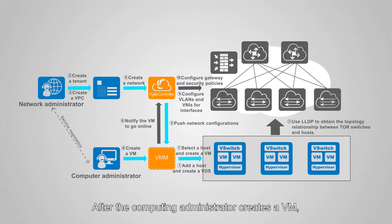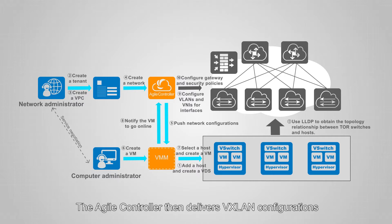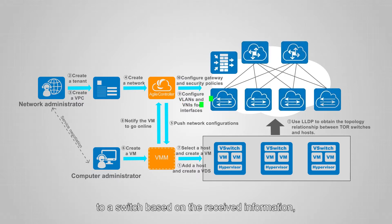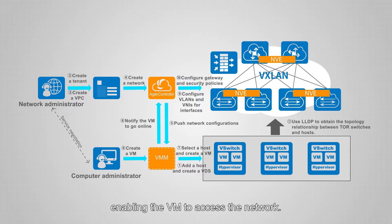After the computing administrator creates a VM, the VMM server information and interface information are sent to the agile controller. The agile controller then delivers VXLAN configurations to a switch based on the received information and creates VXLAN access configurations on the corresponding switch interface.